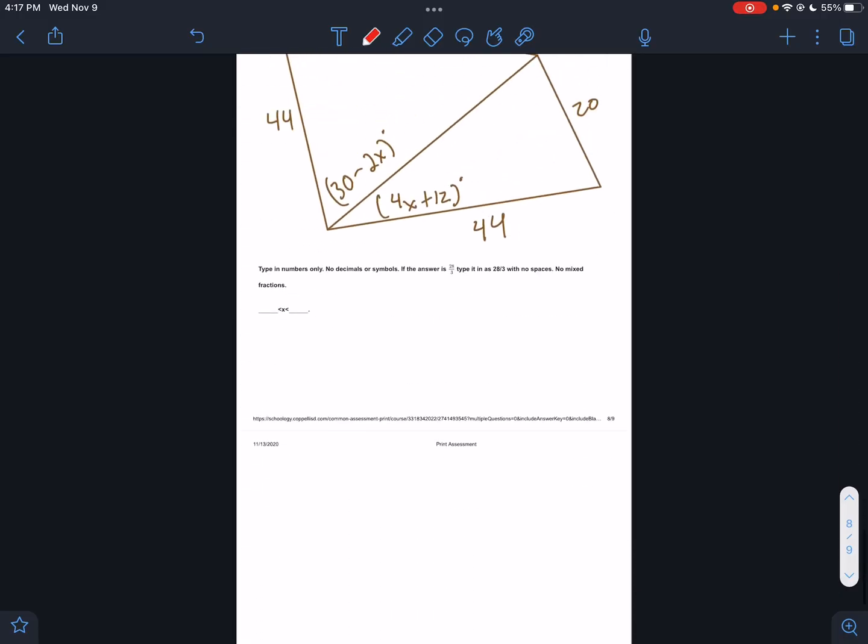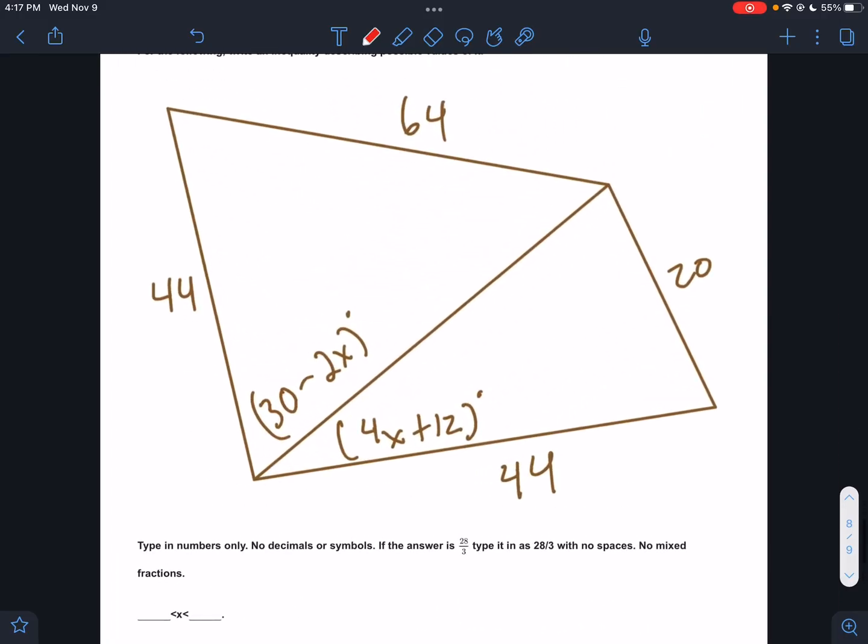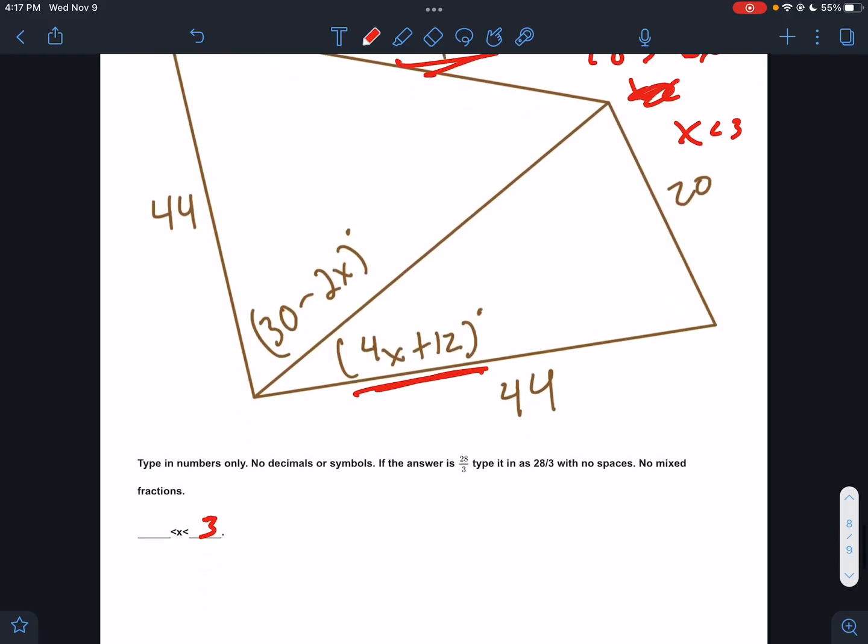And last one real quick, what's the bigger side? 64. So 30 - 2x is bigger than 4x + 12. So 6x is less than 18, x is less than 3. X must be less than 3, that's an upper boundary. What's the lower boundary?